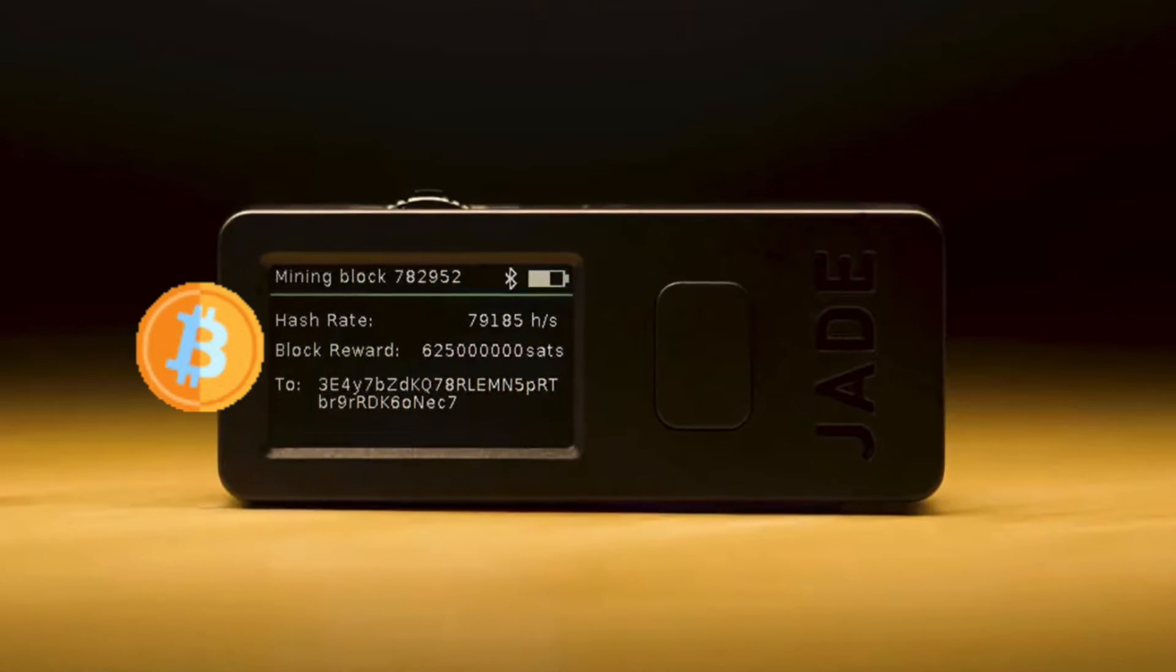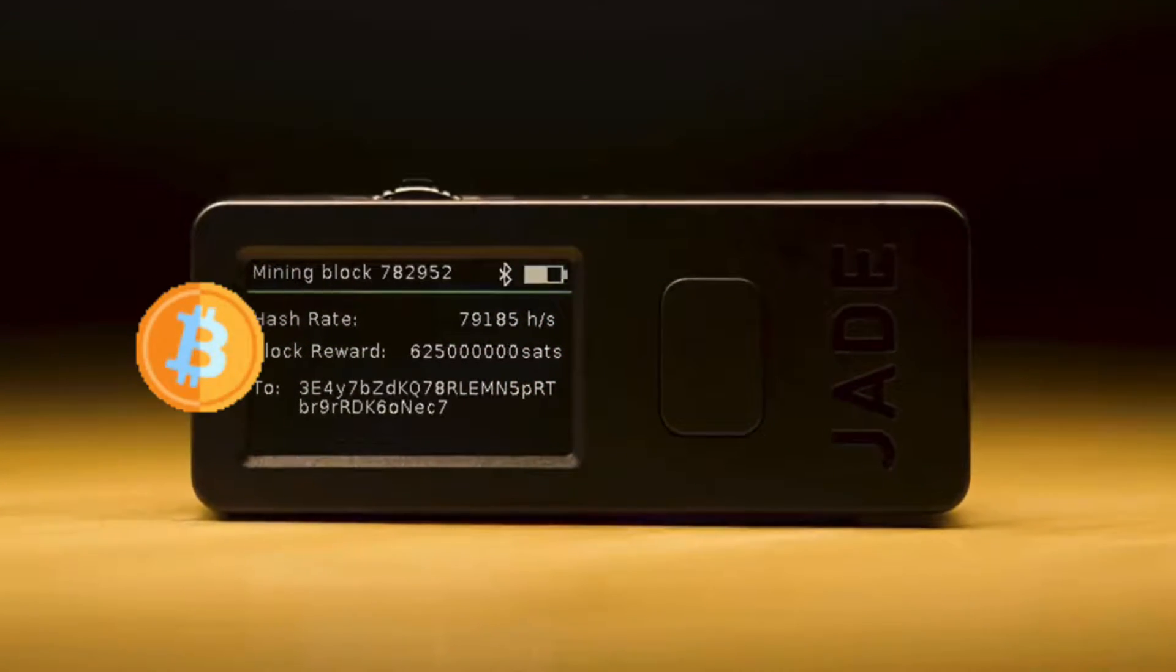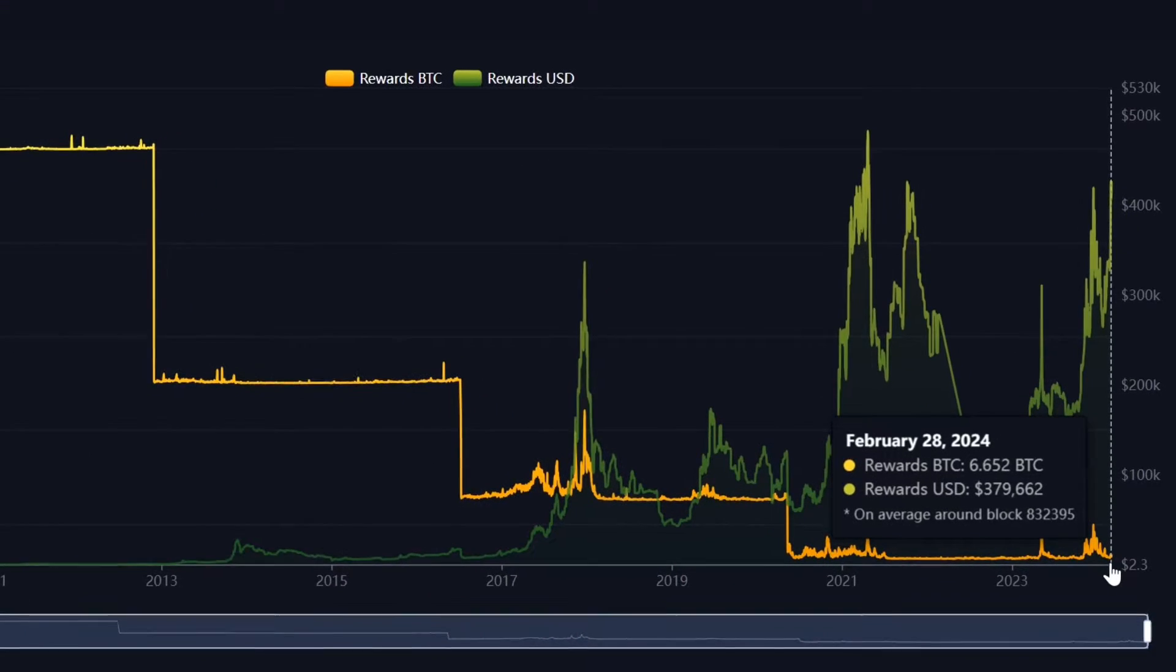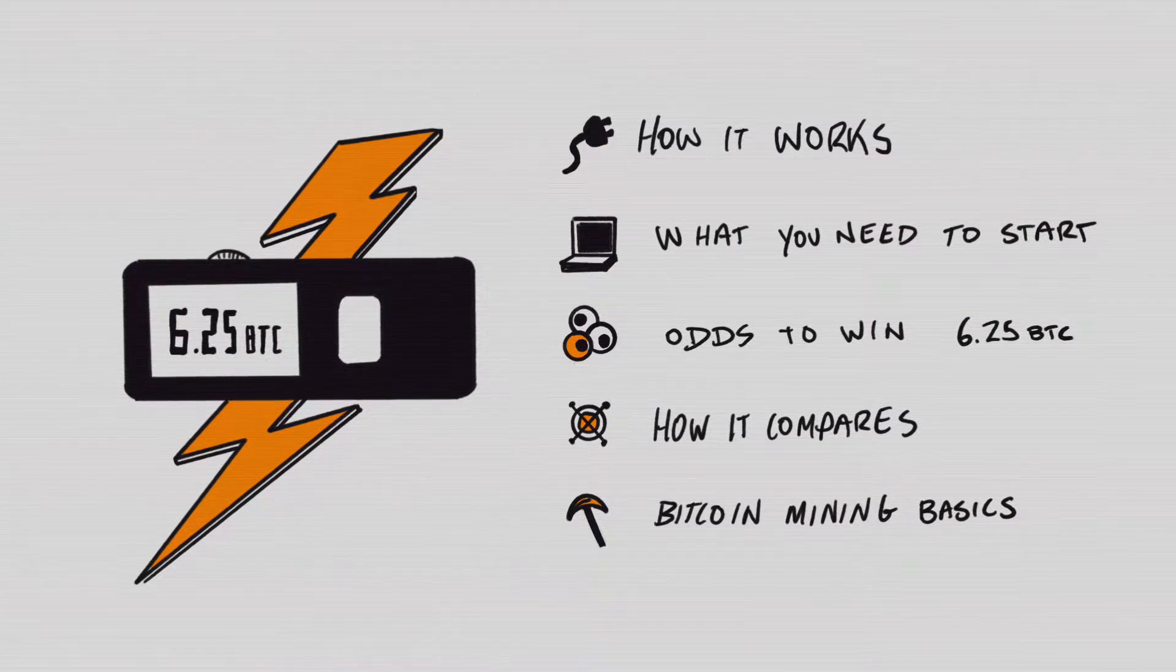I'm going to show you how to play the Bitcoin lottery and all it costs you is 75 bucks. Today I'm going to show you how to solo mine Bitcoin with this device for a prize of 6.5 Bitcoin or roughly $300,000 every 10 minutes.